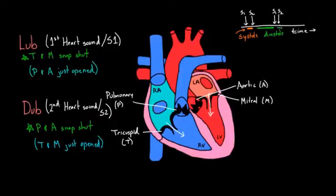Now you can actually listen to your heart and figure out what's happening. The space and time between lub and dub is systole. And when you've just heard dub and you're waiting for lub again, that space and time is diastole.